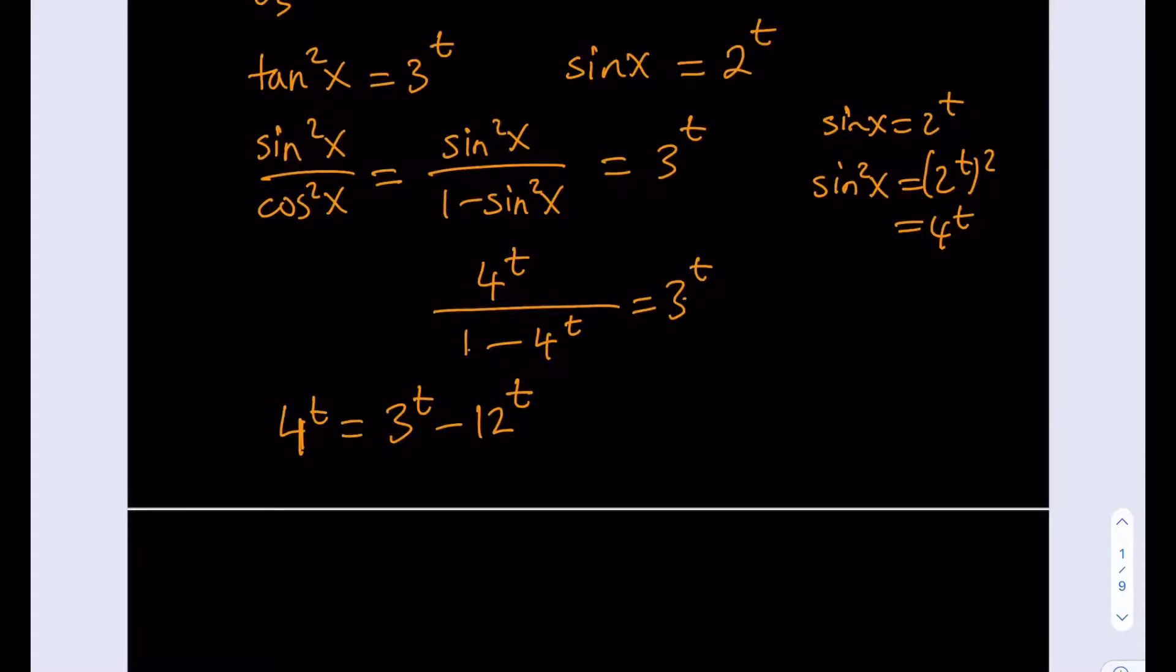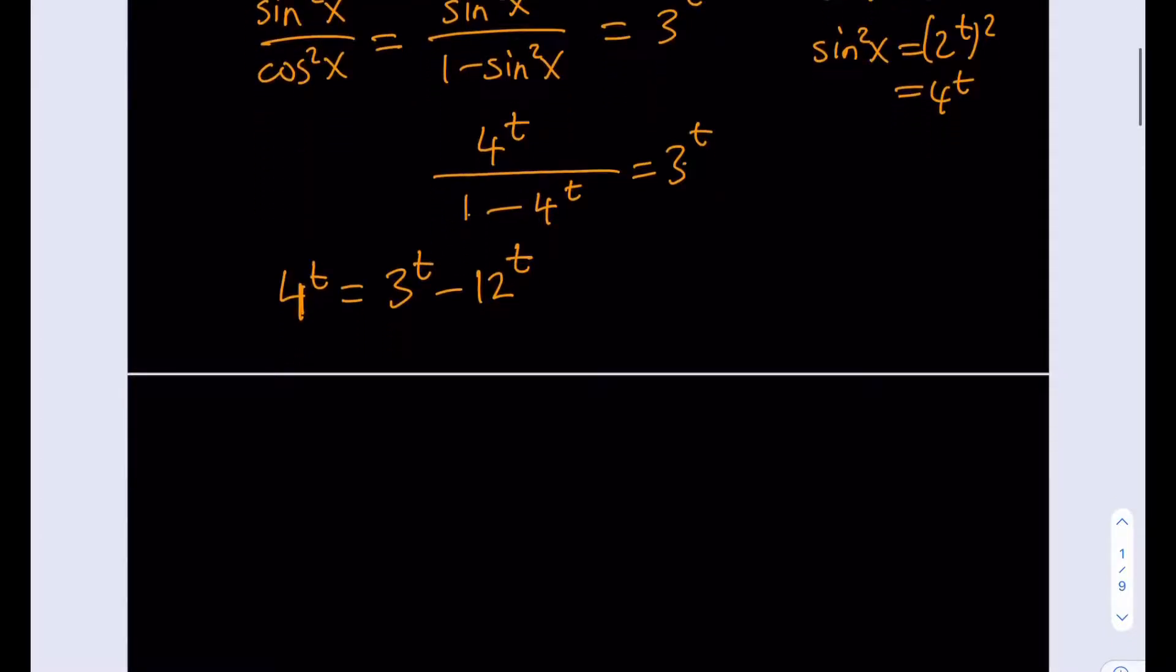Okay, all right. So we want to simplify this a little bit so that we can kind of make some comparisons. So what I'm going to do is I'm actually going to divide everything by 4 to the power t. So it's going to look like this: 4 to the power t divided by 4 to the power t, which is equal to 3 to the power t minus 12 to the power t divided by 4 to the power t.